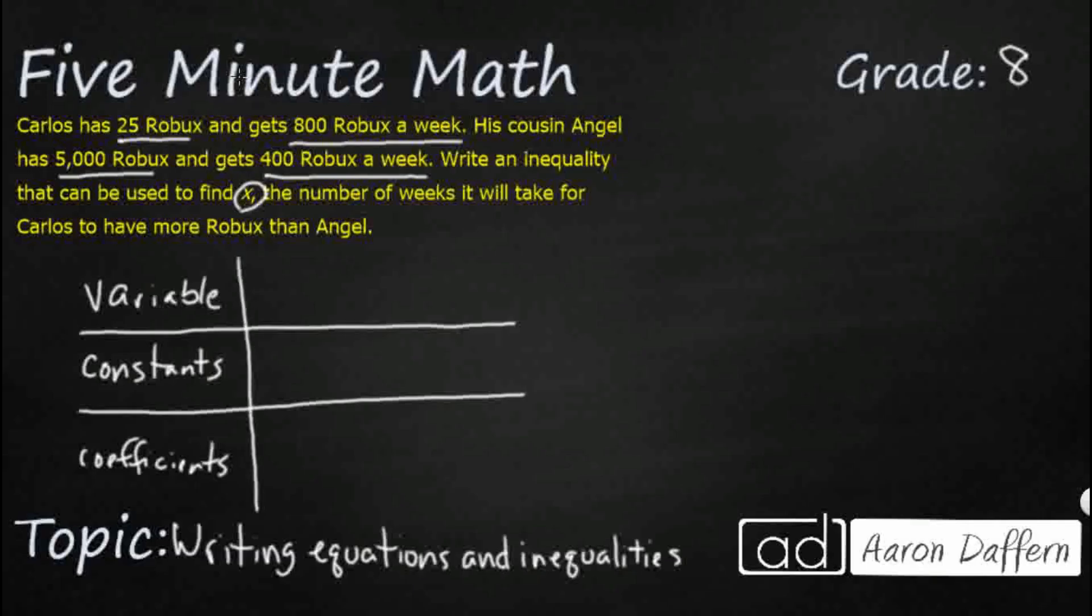So let's see what we have here. We've got two different people. We're just going to make a little table to keep our thoughts organized. So we've got Carlos. And we've got Angel. All right. So our variable.